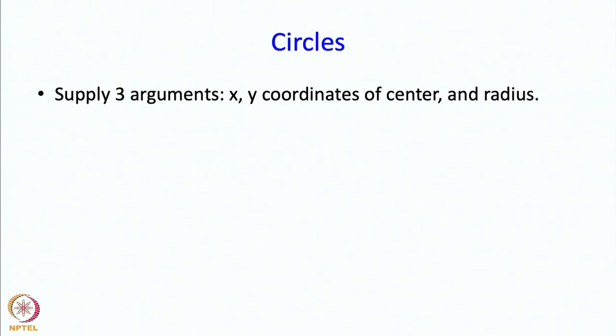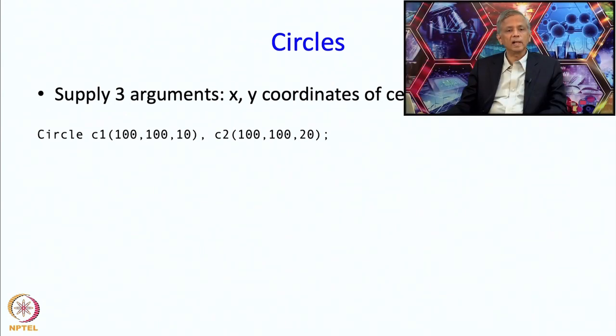For circles, you supply three arguments: the x, y coordinates of the center and the radius. For example, circle c1(100, 100, 10) gives one circle at center 100, 100 of radius 10. Circle c2(100, 100, 20) gives another circle at the same center with radius 20. These two will be concentric circles.